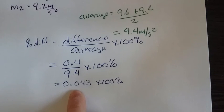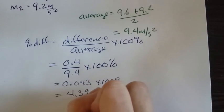That's a decimal. To change it to a percentage, I move the decimal place over two times: one, two, and I end up with 4.3%.